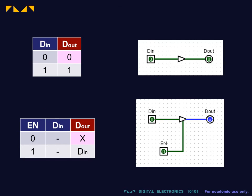The lower two rows can also be combined, since if the buffer is enabled, the output Dout is equal to the input Din.